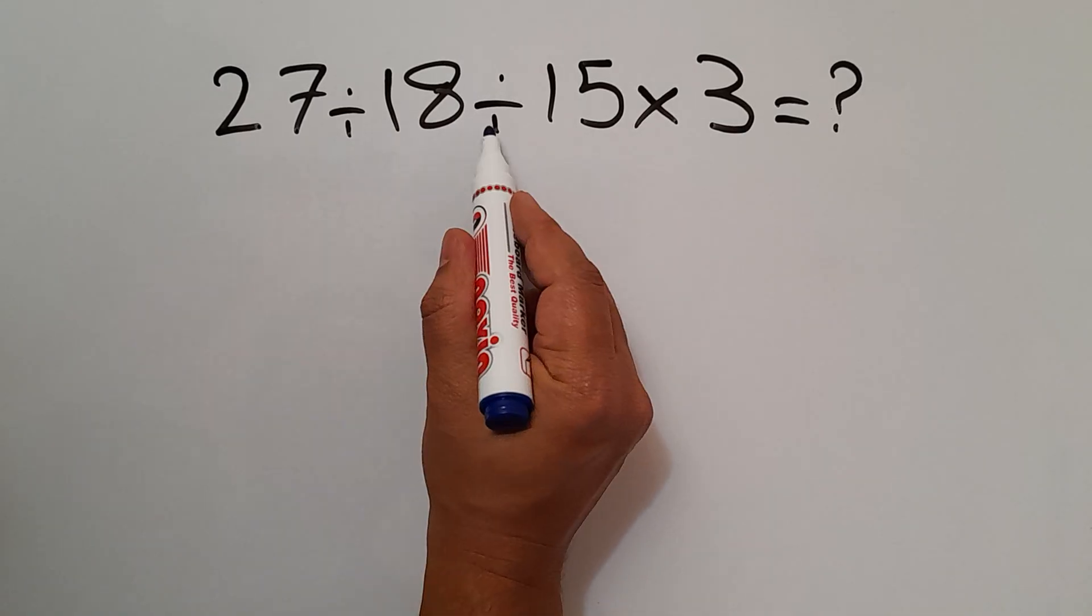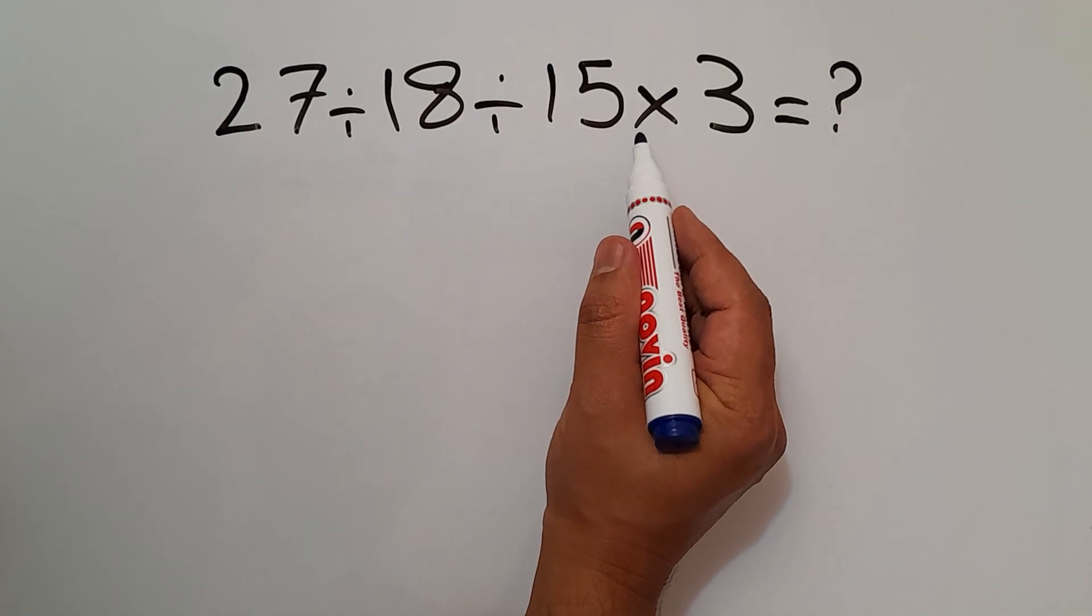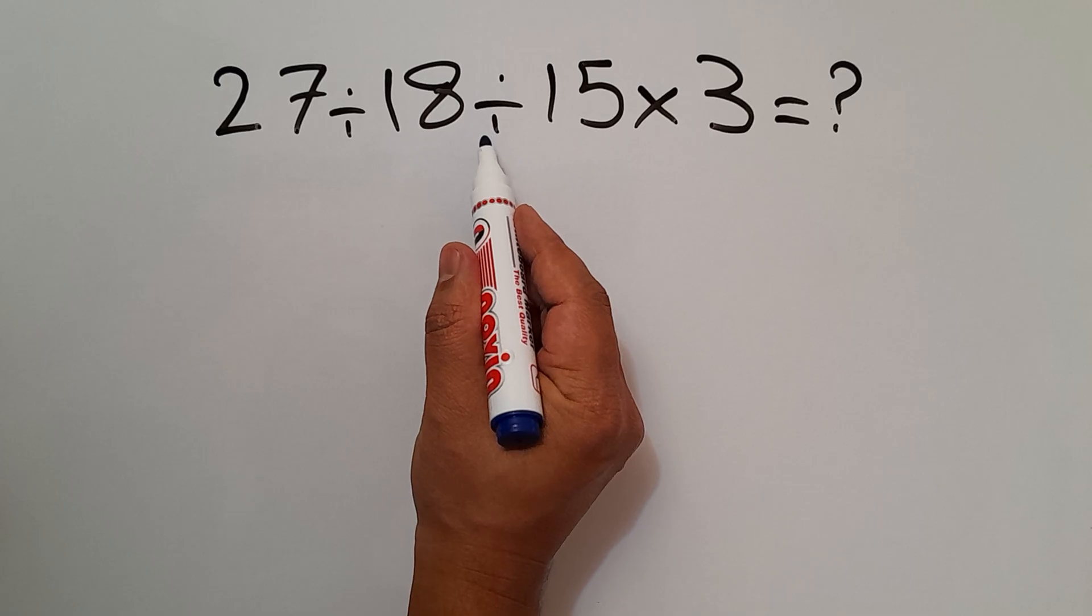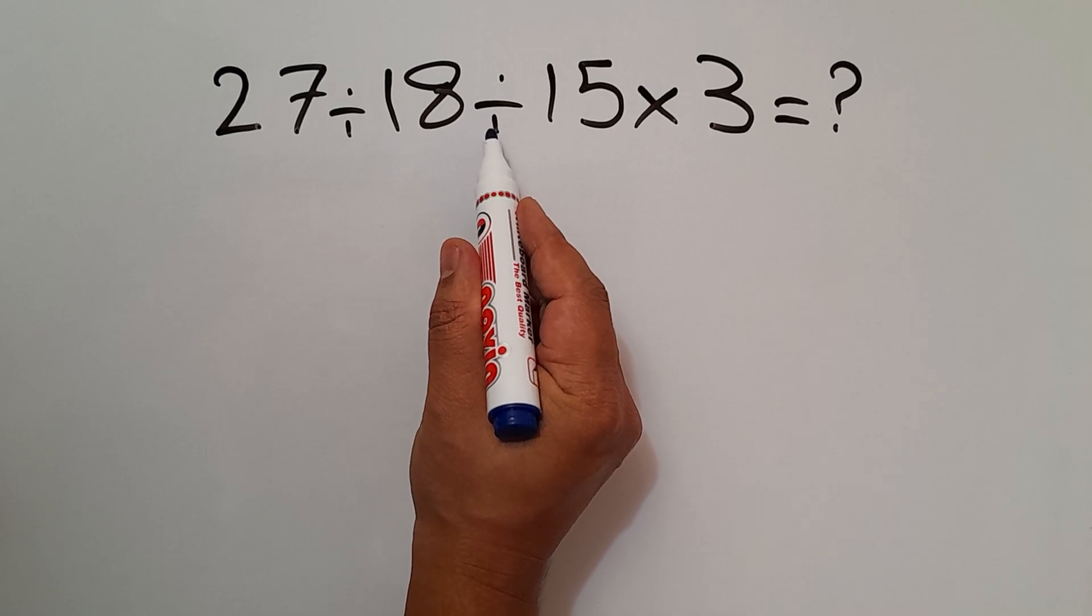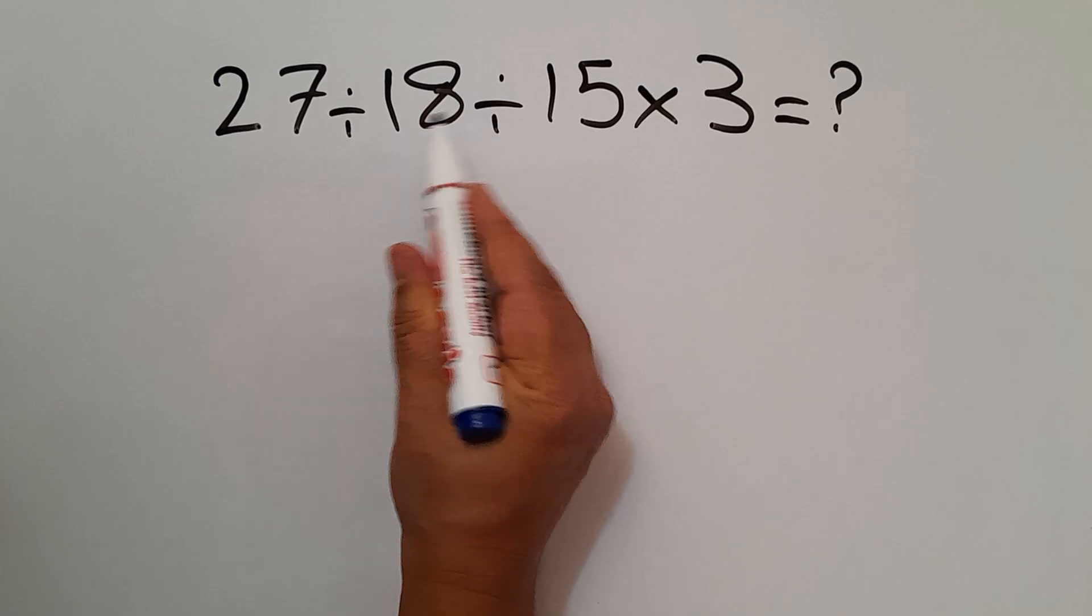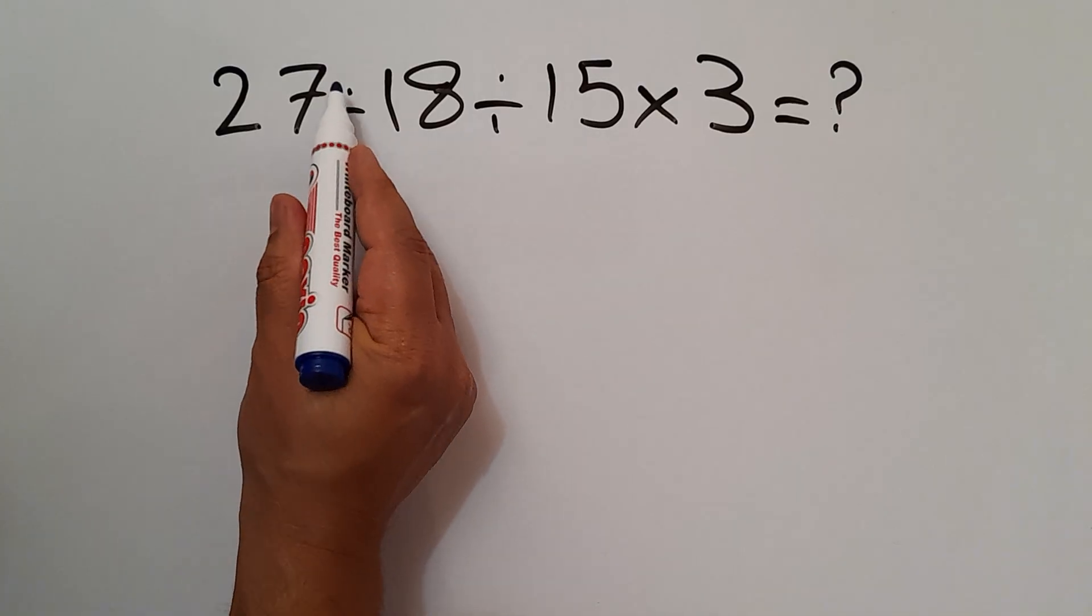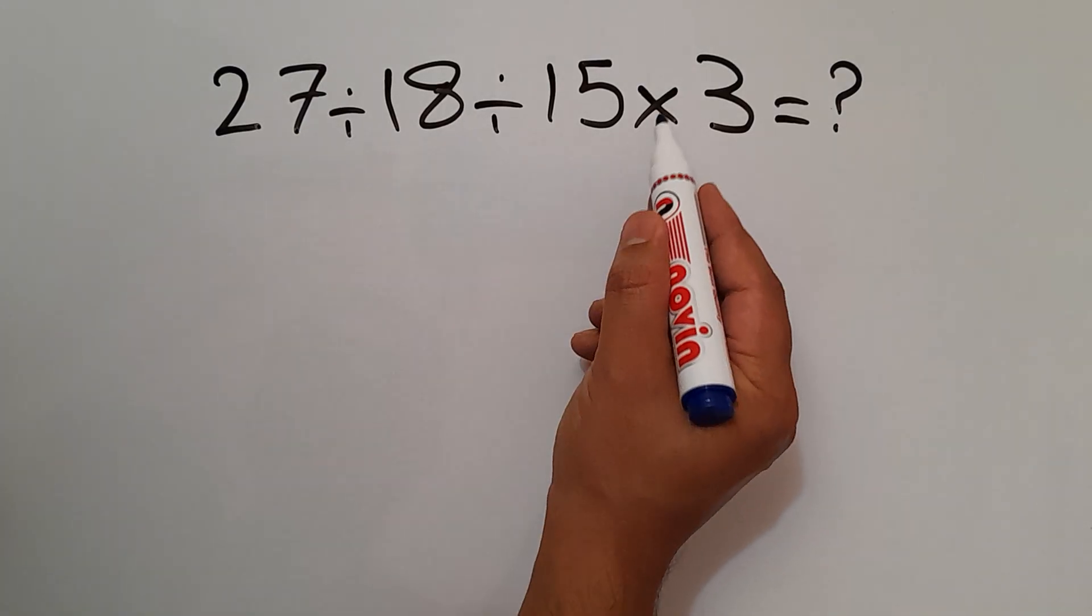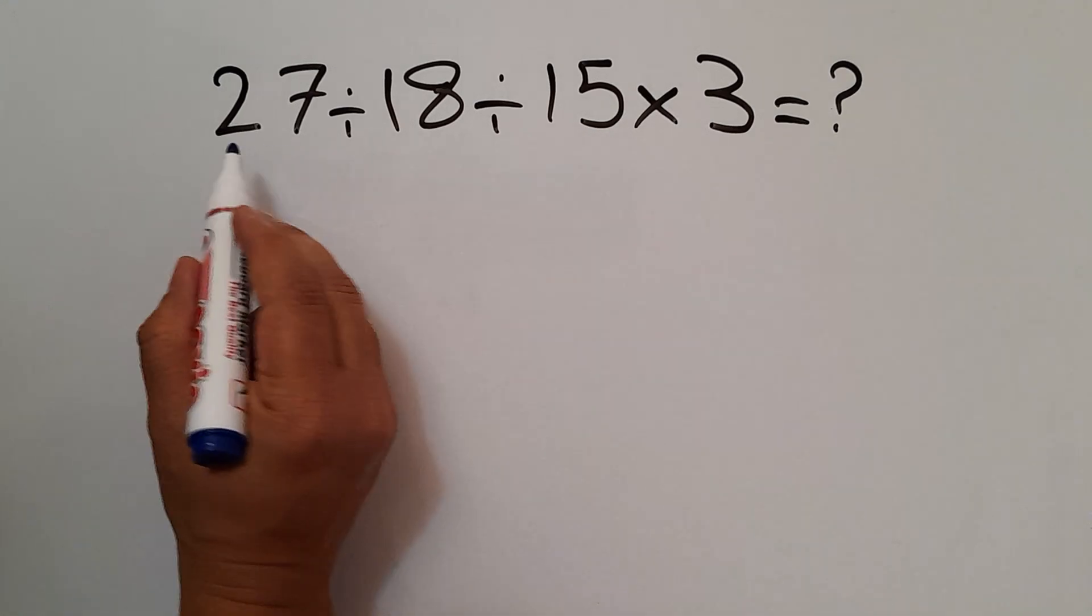According to the order of operations, multiplication and division have equal priority and we have to work from left to right. So first this division, then this division, and finally this multiplication.